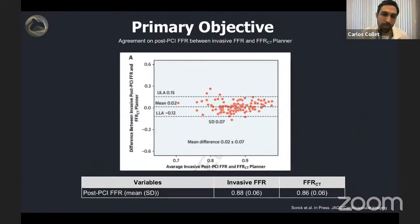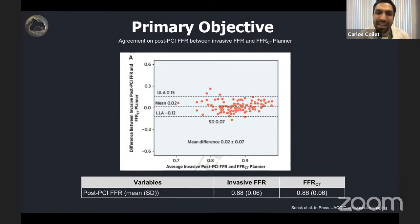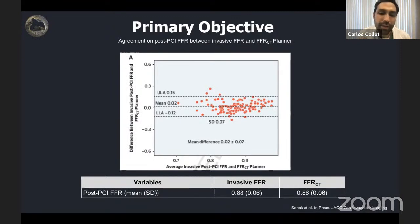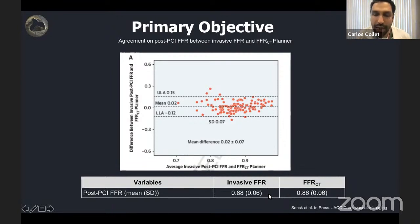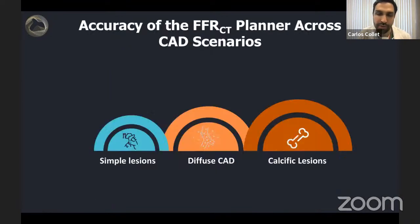The mean difference between the FFR CT Planner prediction and the invasive FFR was 0.02 — so this tool is accurate. It is also precise: the standard deviation of the mean difference was 0.07. You can see the mean FFRs and standard deviation observed with both invasive and post-PCI FFR CT.